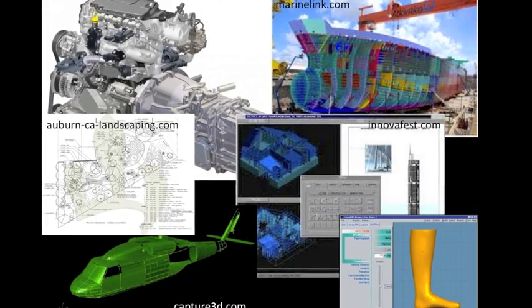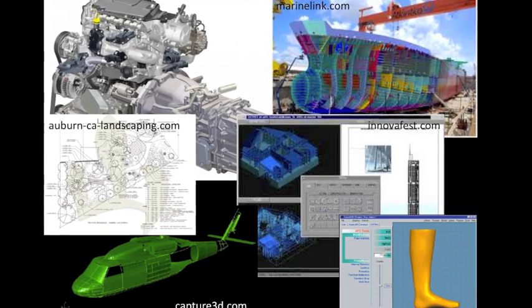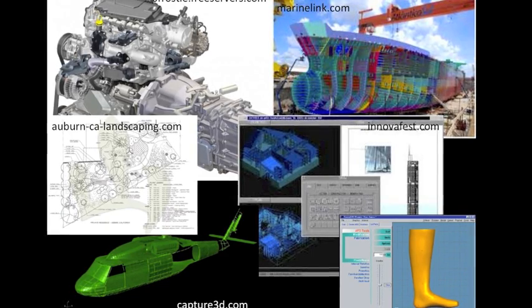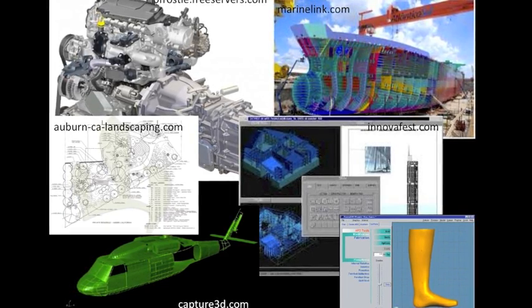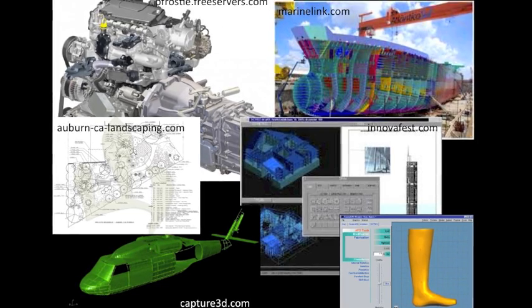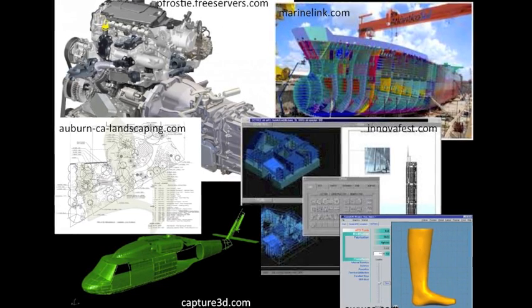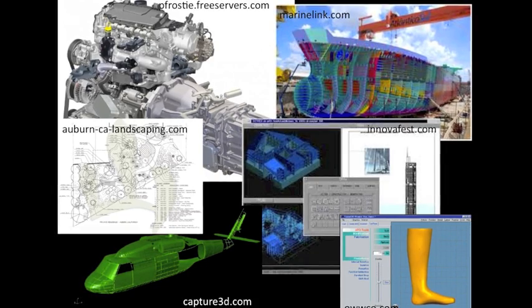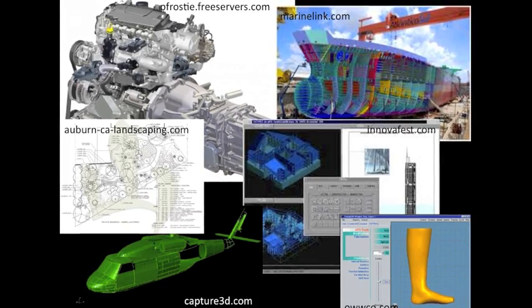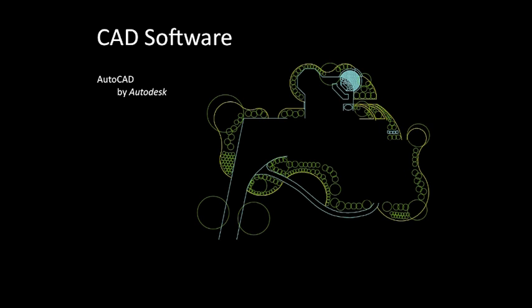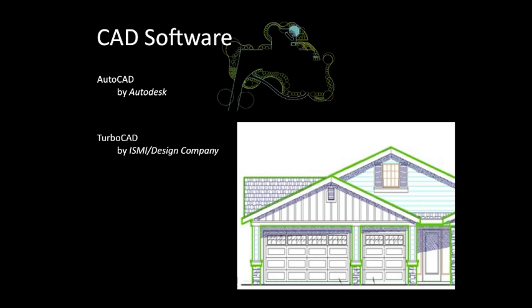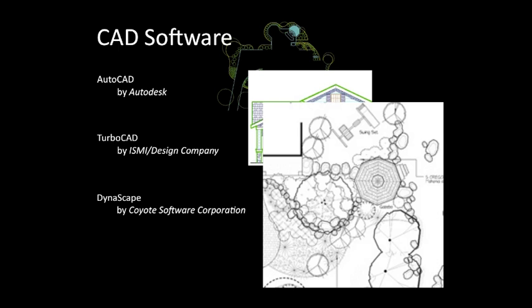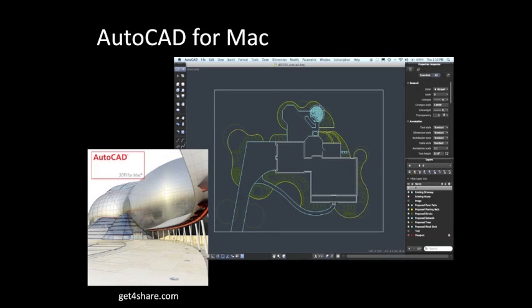With such a diverse design industry, it is no surprise that there is an equally copious selection of CAD software programs available for use. Many of the advertised programs are tailored to fulfill the design needs for specific professions, such as the automotive, shipbuilding, aerospace, architectural, prosthetics, and landscaping industries. Some of these products include AutoCAD by Autodesk, TurboCAD by IMSI Design Company, and Dynascape by Coyote Software Corporation. Autodesk even unveiled its AutoCAD for Mac 2011 late in October 2010, introducing a CAD program for the Mac OS.